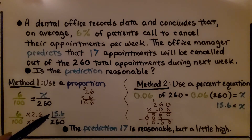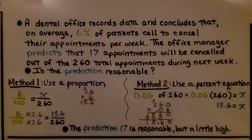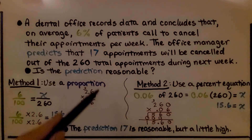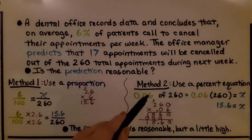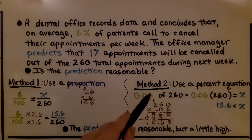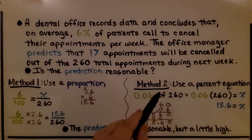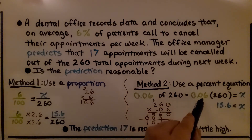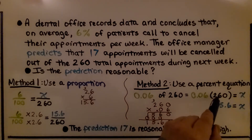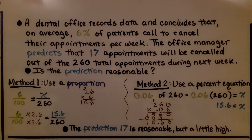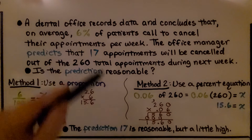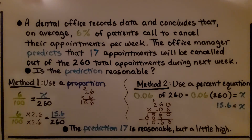That means 15.6 out of 260 would be the number of cancellations. For Method 2, using a percent equation, we write 6% as the decimal 0.06, and we need to find 6% of 260. We think of 'of' as multiplication, so 0.06 times 260 equals x, giving us 15.6. So the prediction of 17 is reasonable, but it's a little high, since the calculation gives 15.6.